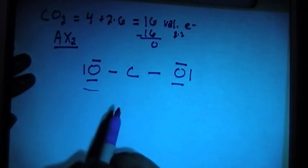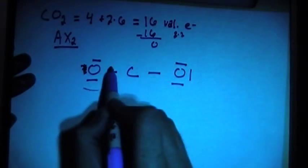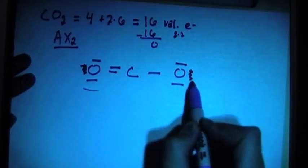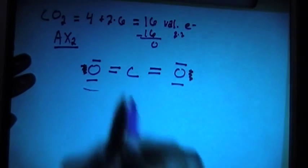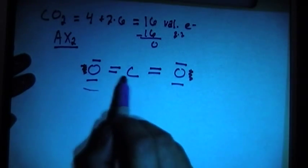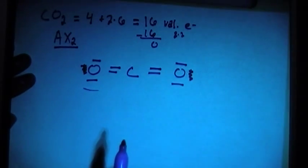But notice the carbon does not yet have its octet, so we need to fix that. So let's go ahead and move this bond to the center, making a double bond here, and move these two electrons here, making this a double bond. And now notice each atom has 8, so they each have their full octet, and there's a total of 16 valence electrons used.